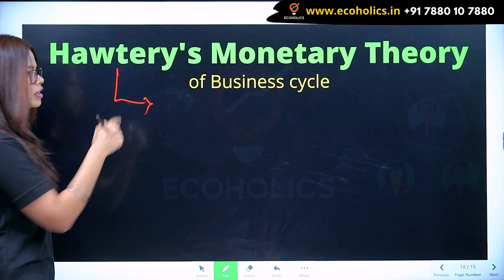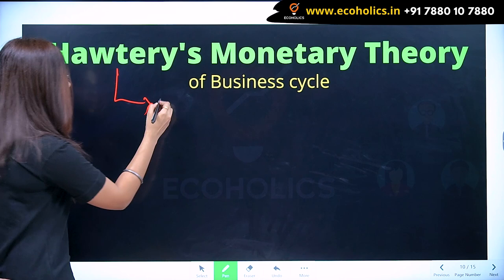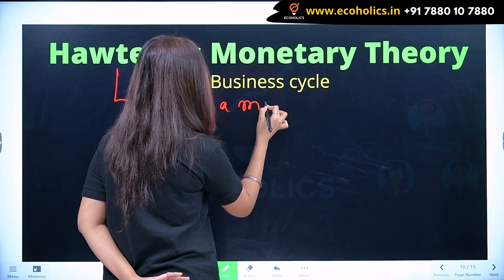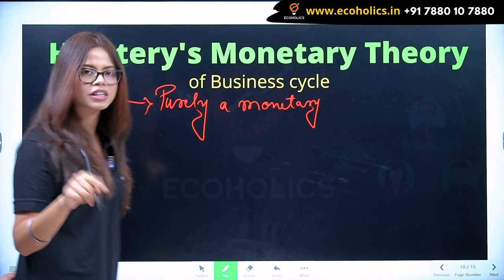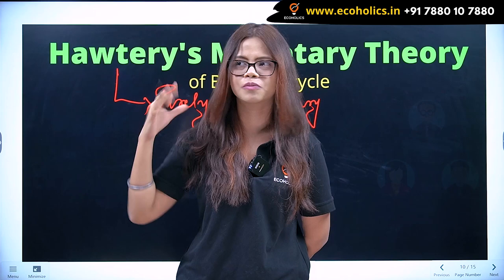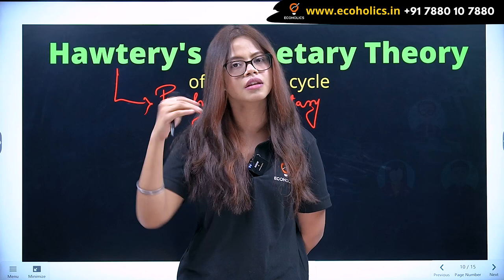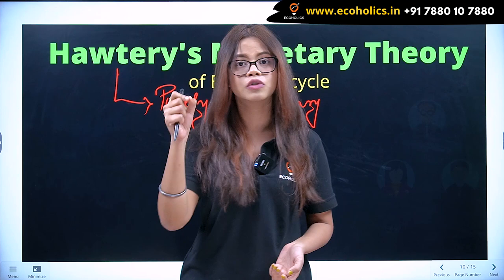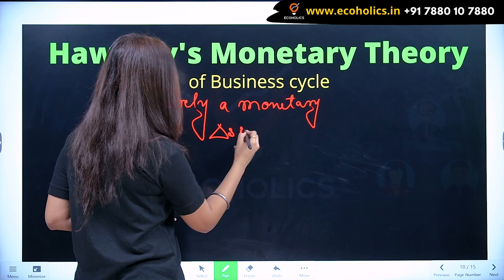Business cycle fluctuations come from business cycle — it is purely a monetary phenomenon. When I say it is purely a monetary phenomenon, your mind will click on money-related flow of money. Fluctuations in the business cycle are mainly because of the flow of money in the economy — changes in the flow of money.